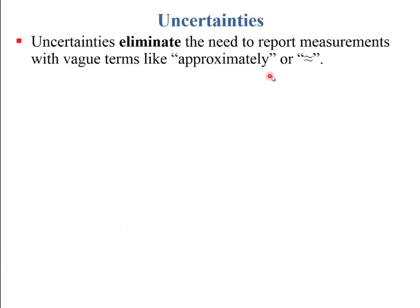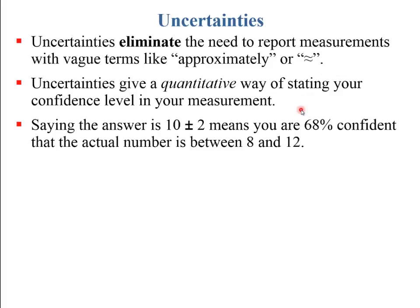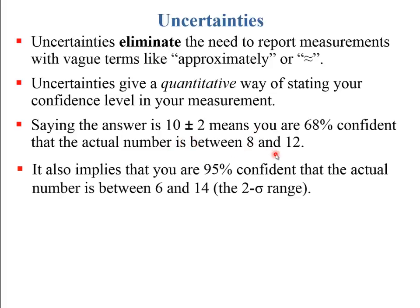Uncertainties eliminate the need to report measurements with vague terms like 'approximately 1,600' or a squiggly equal sign. They give you a quantitative way of stating your confidence level in your measurement. For example, 10 plus or minus 2 means you're 68% confident that the actual number lies between 8 and 12, and it also implies you're 95% confident the actual range is within two error bars, so between 6 and 14.